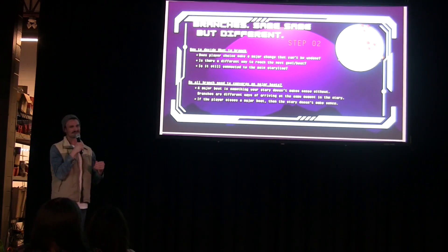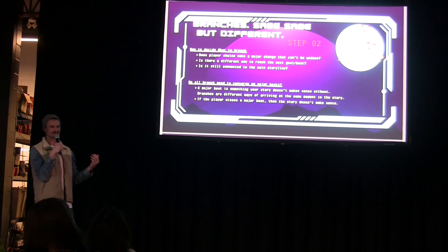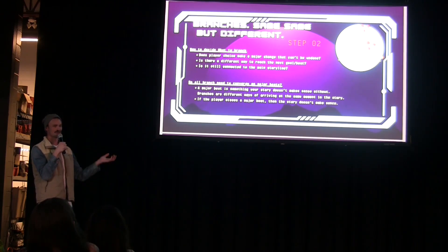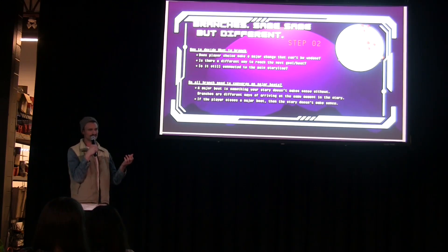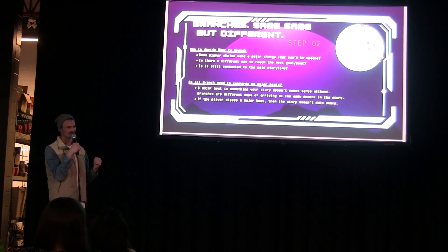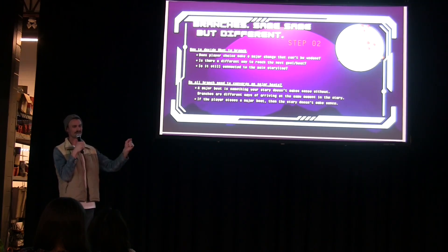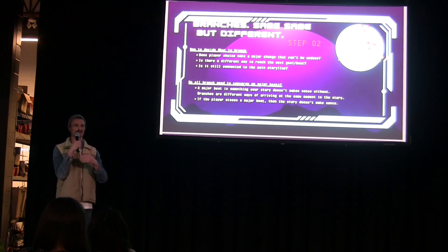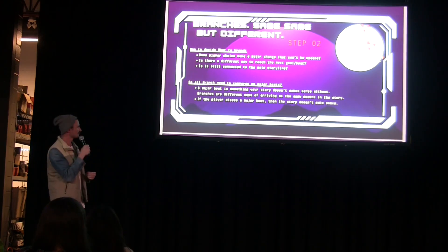How to decide what a major branch is: when you're at a major beat, you're asking yourself how can I get to the next beat in a different path? Twine doesn't differentiate between a choice or a branch, but here you're asking yourself: does this have a true consequence, and can I not go back from this? If it's a simple choice that doesn't have a real consequence, that's not a branch. If they're going into the dark forest or up the mountain — that's a branch. Choosing one romantic partner over another — that's a branch.